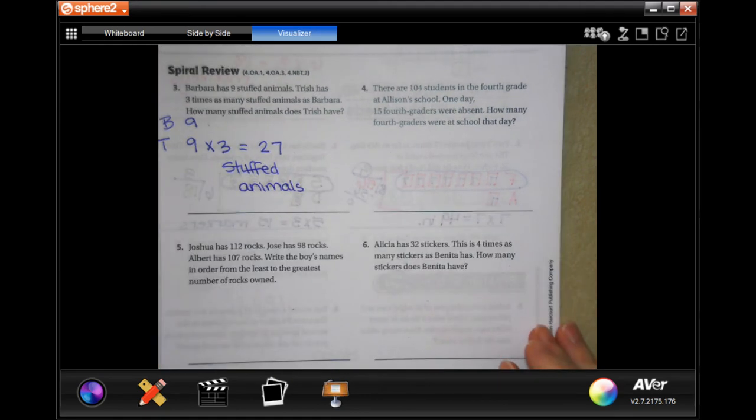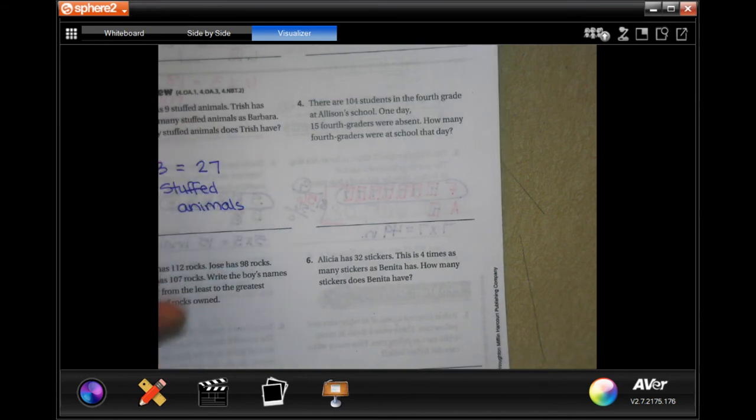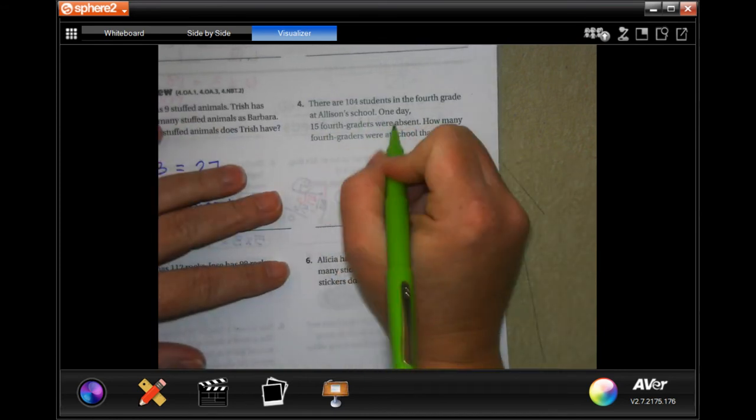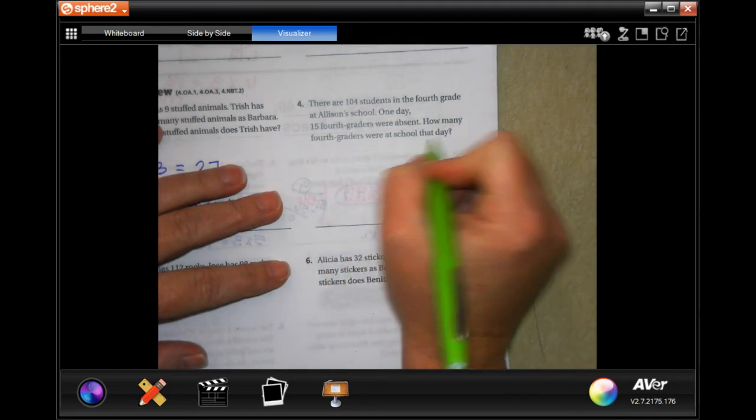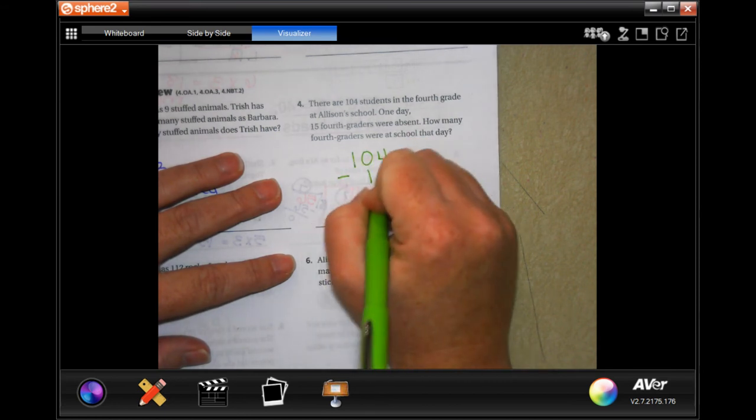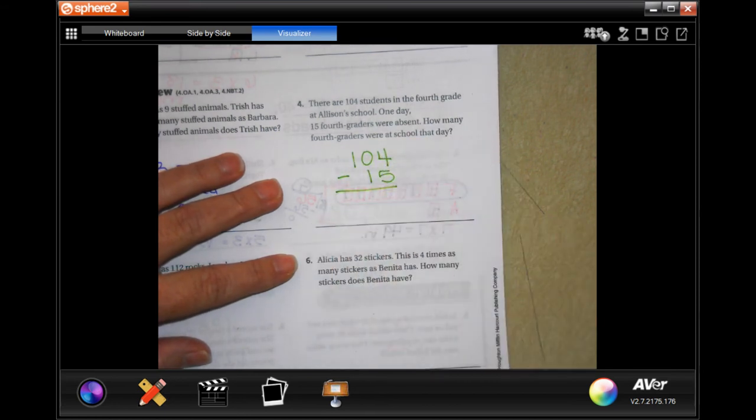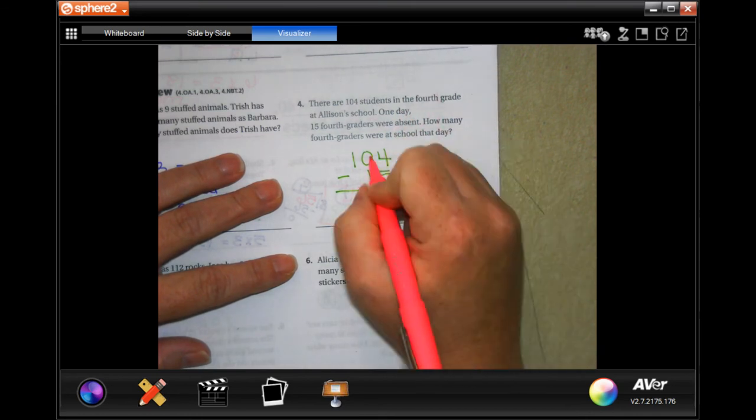Number four: there are 104 students in fourth grade at Allison school. One day 15 fourth graders were absent. How many fourth graders were at school that day? Well that's going to be easy. We have 104 and we're going to minus the 15.